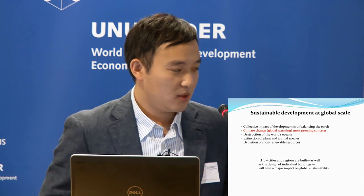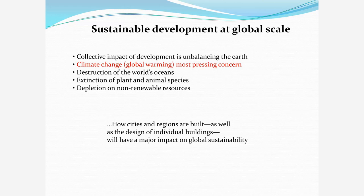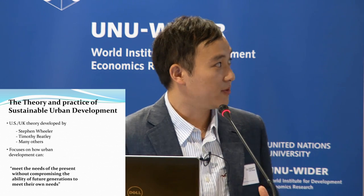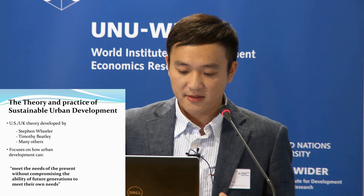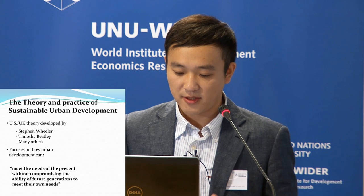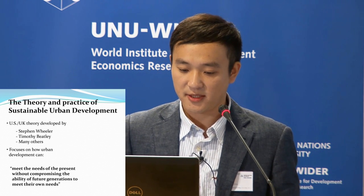The sustainable development should be considered at a global scale, with five sustainable goals in our urban development. The most important one is the climate change era. Some theorists developed the theory of urban development focused on how urban development can meet the needs of the present without compromising the ability of future generations to meet their own needs.